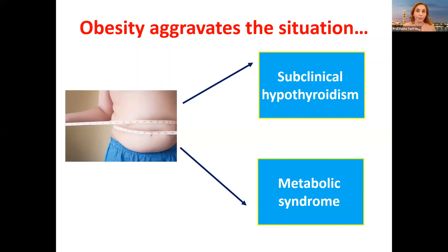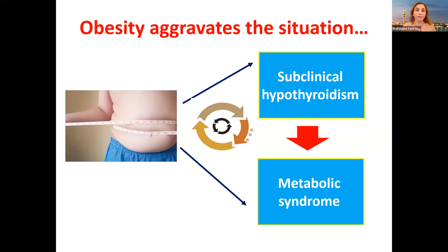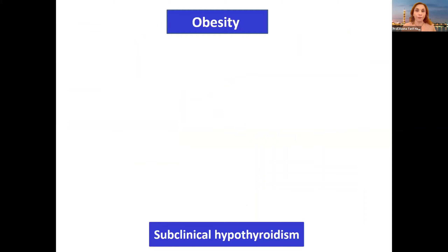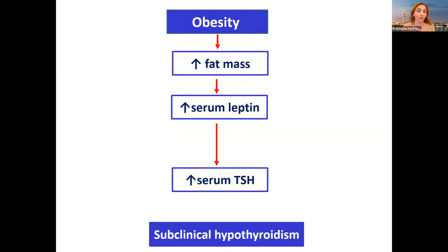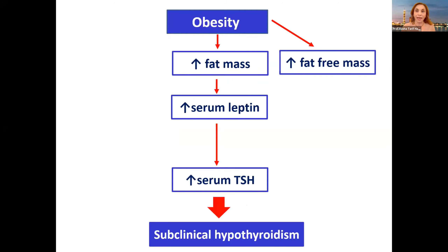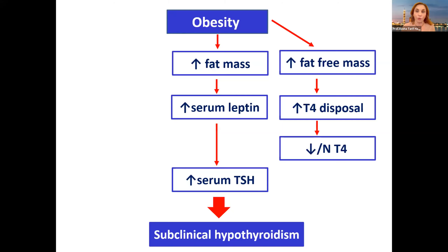Another risk factor is obesity. Obesity aggravates the situation: it predisposes to subclinical hypothyroidism and metabolic syndrome, and subclinical hypothyroidism by itself could predispose to metabolic syndrome — a vicious circle. How does obesity lead to subclinical hypothyroidism? Increased fat mass increases serum leptin, which increases TSH; and increased fat-free mass increases T4 disposal, which lowers T4, causing a compensatory rise in TSH.